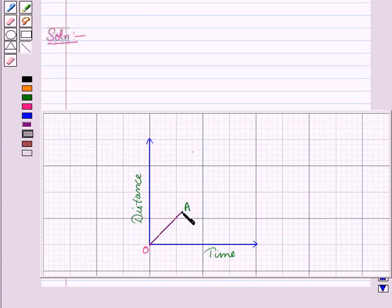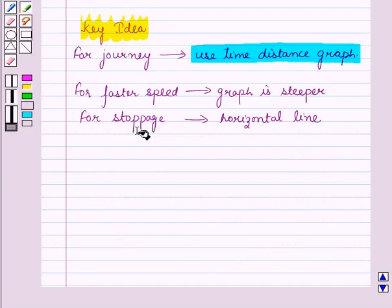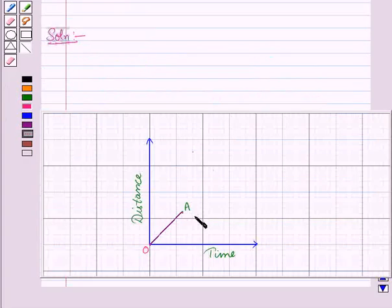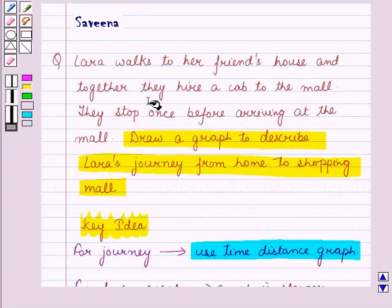Now at her friend's house, she stays for a while. And from the key idea, we know that for stoppage, we use a horizontal line. So we will use a horizontal line here. And after this, both of them hire a cab.